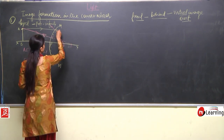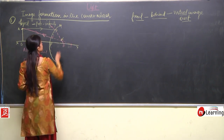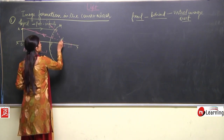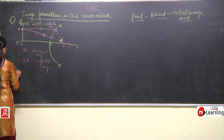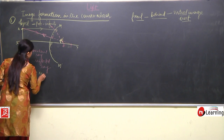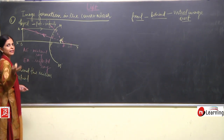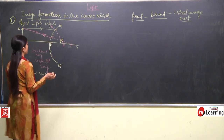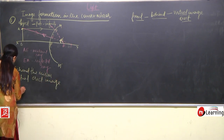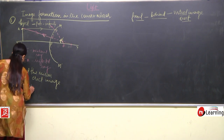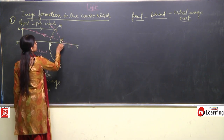When we extend these two rays backwards, we get a point behind the mirror which we name A dash. Drawing a perpendicular line gives us the image. The image is formed behind the mirror — it is virtual because we only extended the rays; behind the mirror nothing is actually happening. So the image is virtual, erect, and diminished — a very small image is formed.